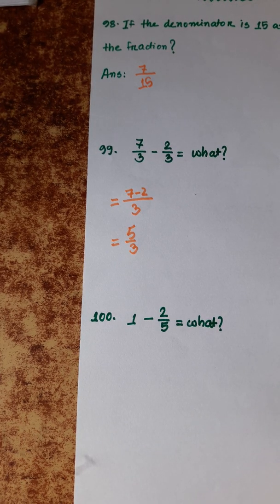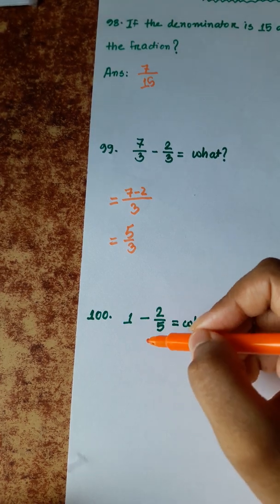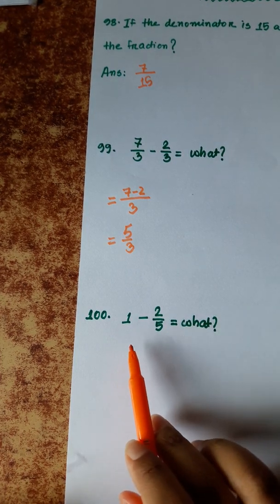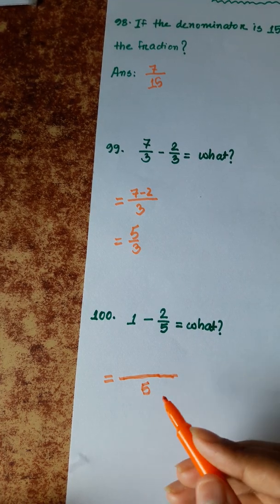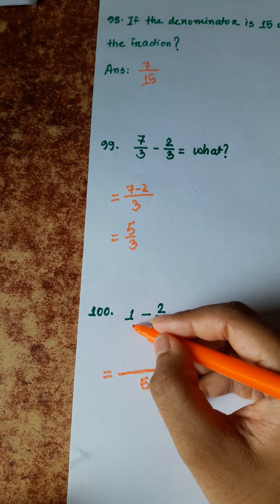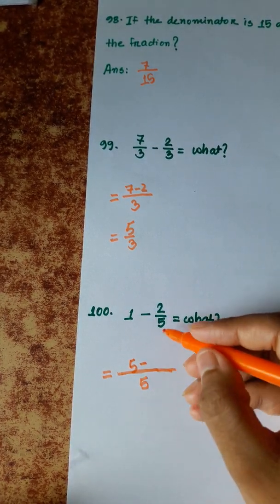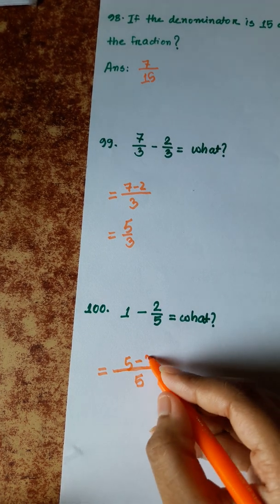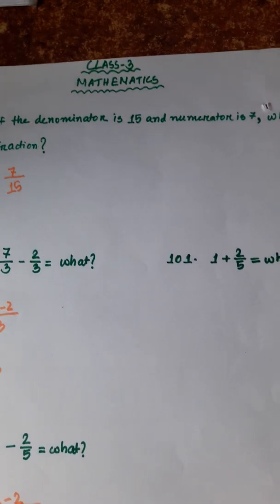Question 100: 1 minus 2/5. The integer 1 is converted to a fraction with denominator 5, so 1 equals 5/5. Now subtracting: 5/5 minus 2/5. The denominator is 5, and 5 minus 2 equals 3. So the answer is 3/5.